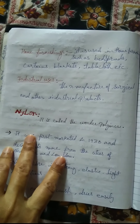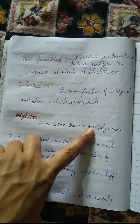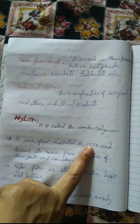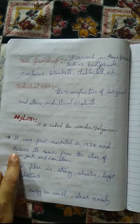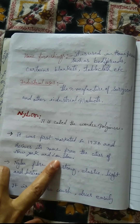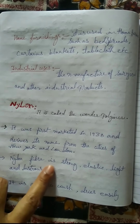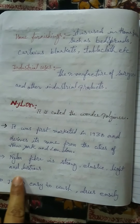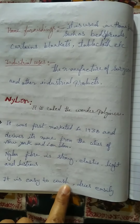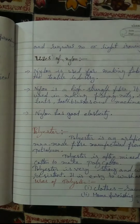Nylon is called the wonder polymer. It was first marketed in 1938 and derives its name from the cities of New York and London. Nylon fiber is strong, elastic, light, and lustrous. It is easy to wash, dries easily, and requires no or light ironing.